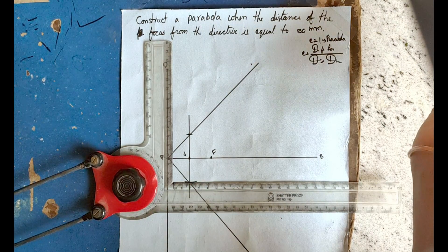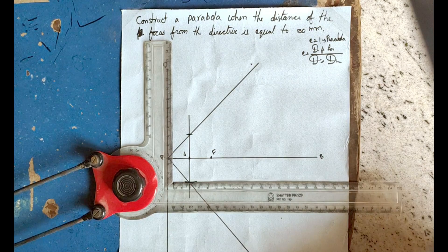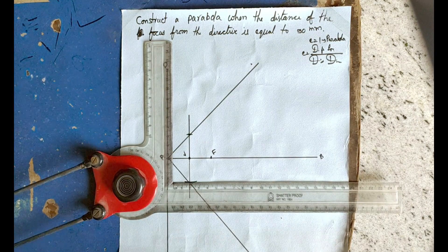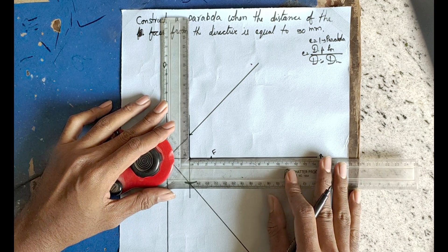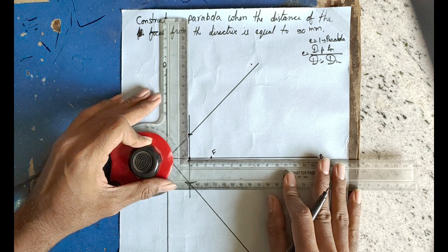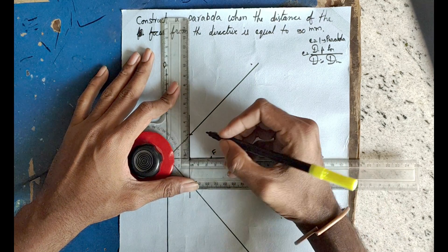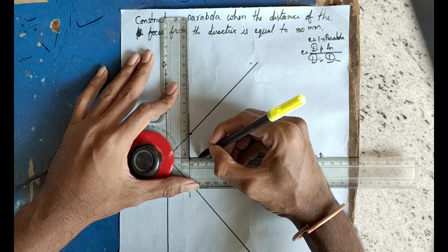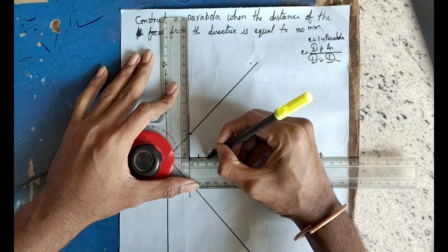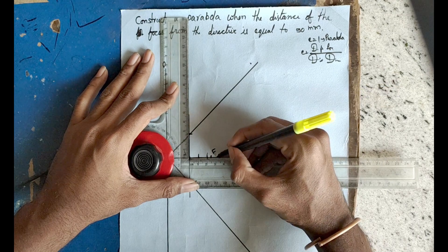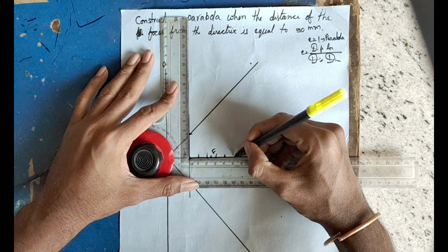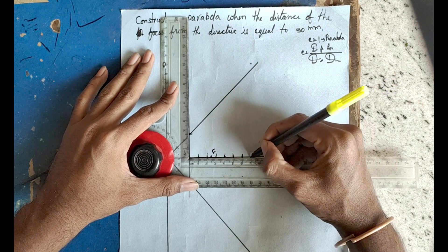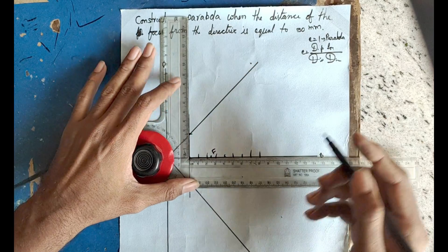Now divide the axis line from V into equal intervals of 1 cm each. Mark points at 1 cm, 2 cm, 3 cm, 4 cm, 5 cm, 6 cm, 7 cm, and 8 cm along the axis, numbering them 1 through 8.